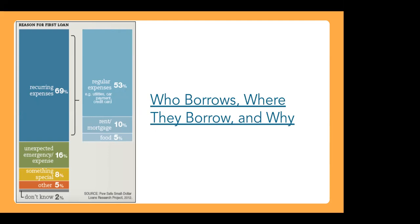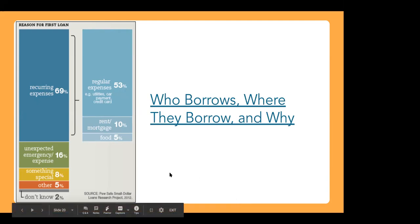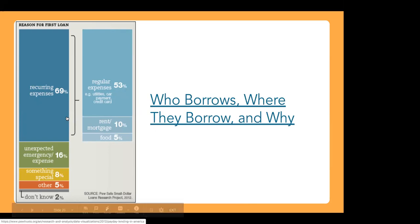A common misconception is that people only take out payday loans when they have some huge emergency that leaves them with no other option. But in reality, the first time people take out a payday loan, 69% say they're doing it for a recurring expense — like a utility bill, a car payment, or a credit card payment. Another 10% use it for rent or mortgage, and 5% for food. That misconception that these are all emergencies people didn't plan for only makes up about 16% of people's first-time use. Most people — about 70% — are using them to meet expenses they can anticipate but don't have the money to cover right then.